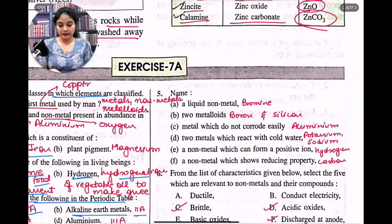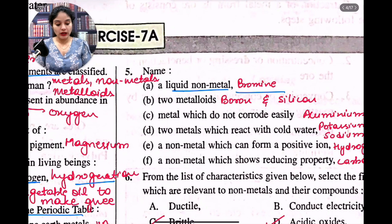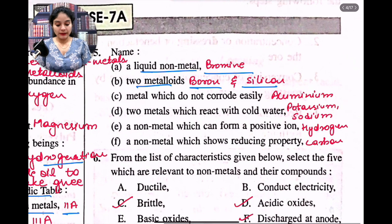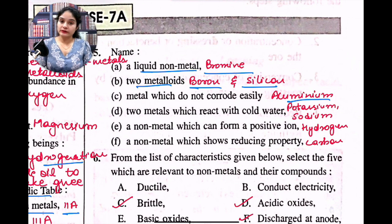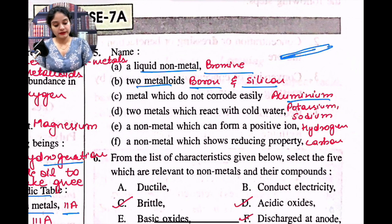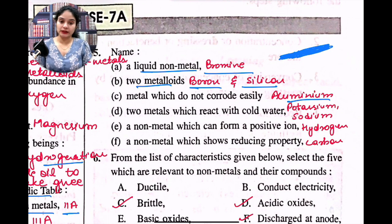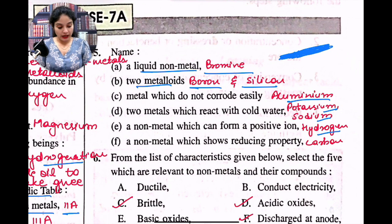Now you have to name the following. A liquid non-metal — the answer is bromine. Two metalloids — that is boron and silicon. Metals which do not corrode easily — aluminium does not corrode easily, because aluminium forms a very stable aluminium oxide coating which sticks to the surface and prevents further corrosion, providing a protective covering. Two metals which react with cold water — potassium and sodium. A non-metal which can form a positive ion — hydrogen. A non-metal which shows reducing property — that is carbon.